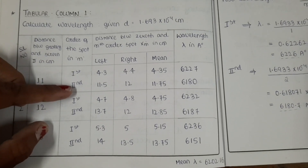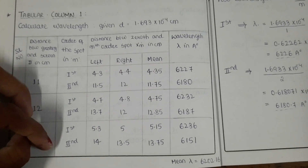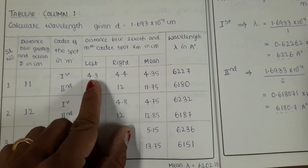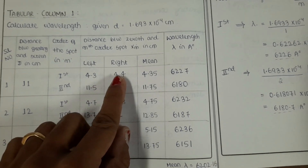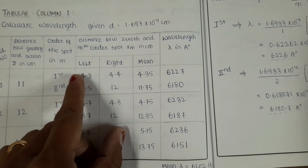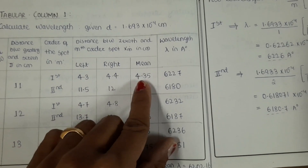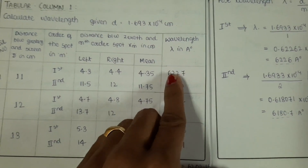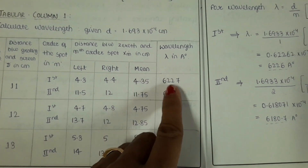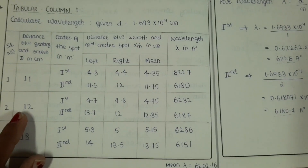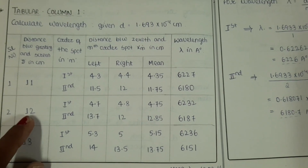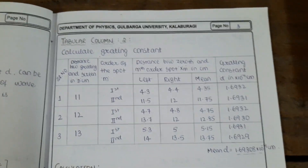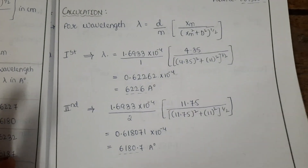For the first order and second order, at a screen-to-grating distance of 11 cm, note the left and right distances from the zeroth order to the first order and zeroth order to the second order, then take the mean. Calculate the wavelength for first and second order at 11 cm, then repeat for 12 cm and 13 cm.